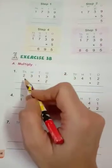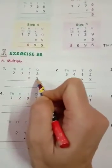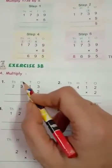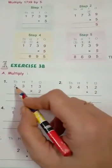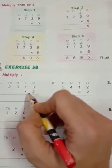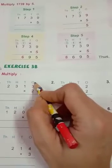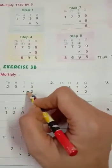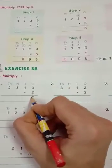Next, exercise 3B. Multiply 2313 by 2. The first step, you have to write the places: ones, tens, hundreds, thousands, and write the numbers in the column. 2313 multiplied by 2. Start multiplying ones column. 3 ones multiplied by 2. 2 threes are 6.